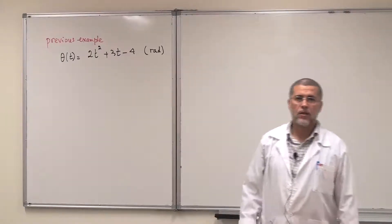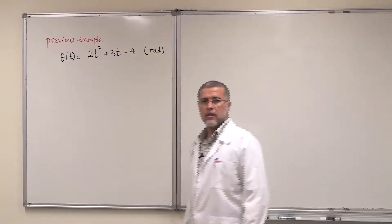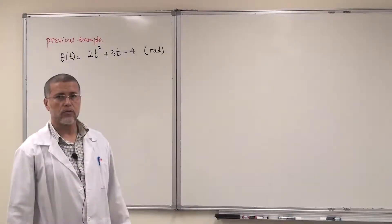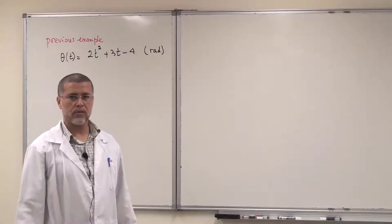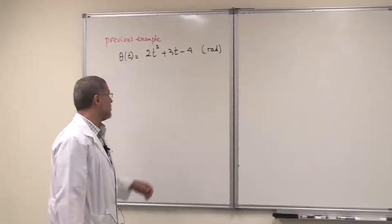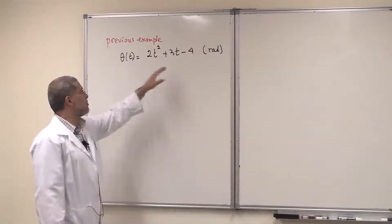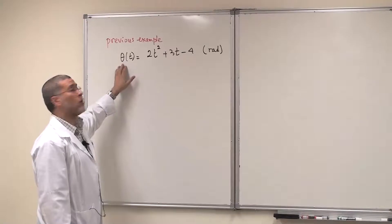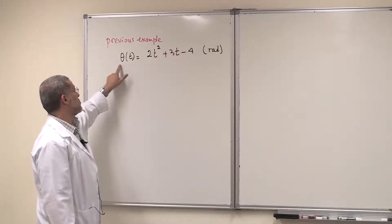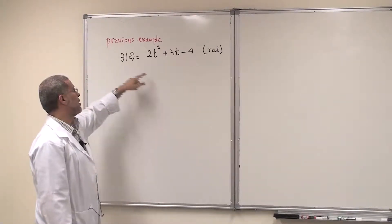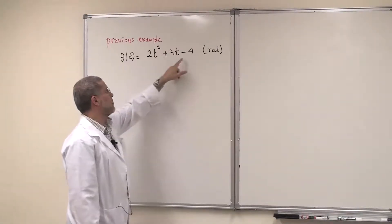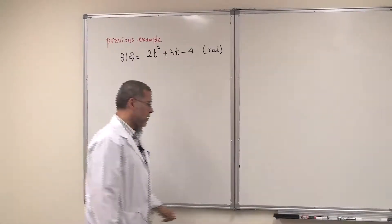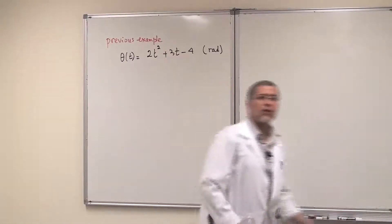We are still discussing kinematics of rotation. As you remember in the previous video, we wrote the equation for the angular position as a function of time: θ(t) = 2t² + 3t − 4, with units of radians.